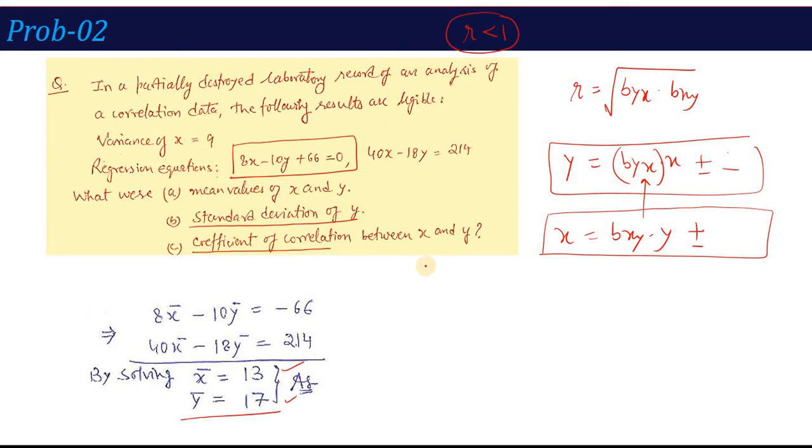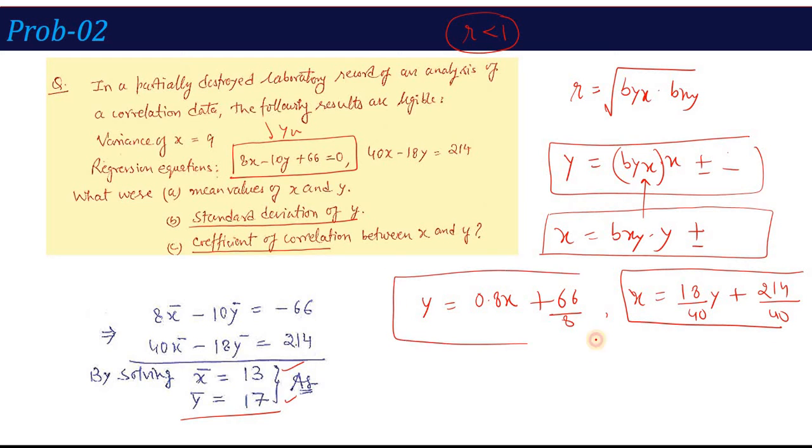So we change our assumptions. Let this given first equation be y on x. Solving for y: y equals 8/10 times x, that is 0.8x, plus 66/10. And the second equation, I take x on y: x equals 18/40 times y plus 214/40. So according to this, my regression coefficient byx equals 0.8 and bxy equals 18/40 which is 0.45. Now multiply these: 0.8 times 0.45 and calculate the square root. You will find that r equals 0.6, which is less than 1. That means our assumption of the regression equations is correct.